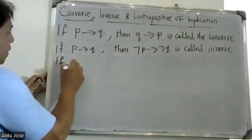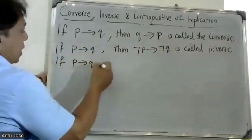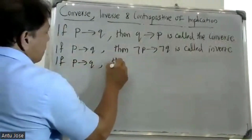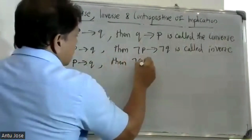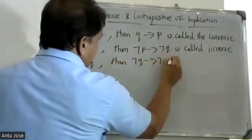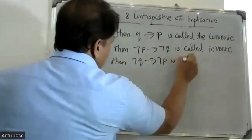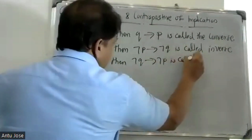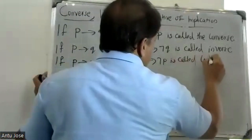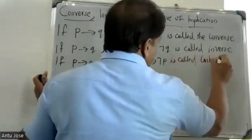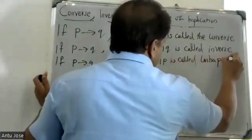If P conditional Q, then negation Q conditional negation P is called the Contrapositive.